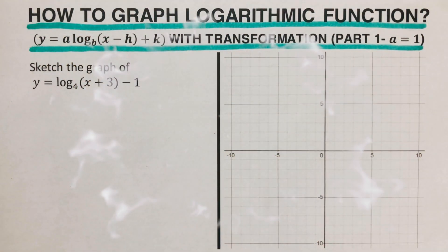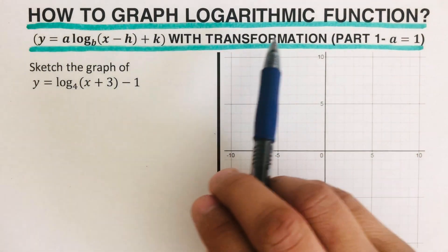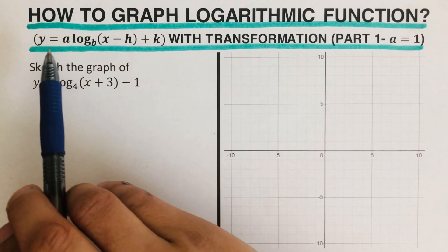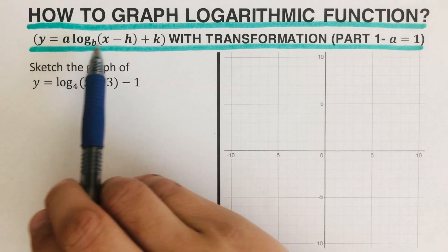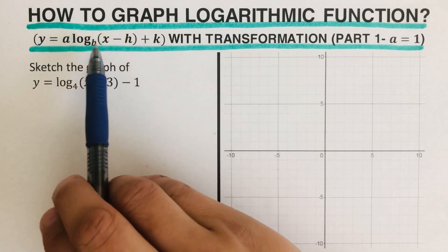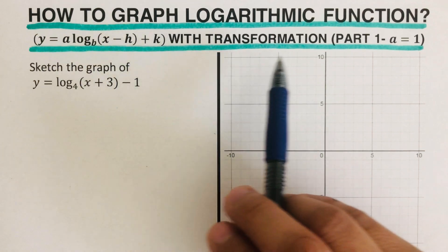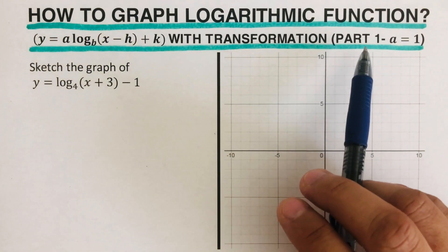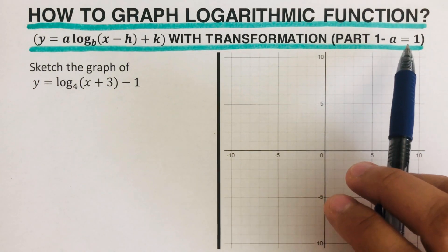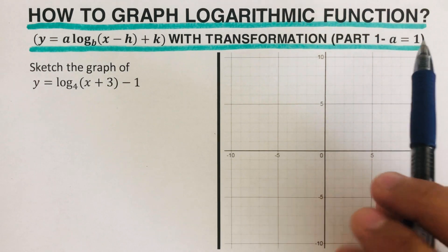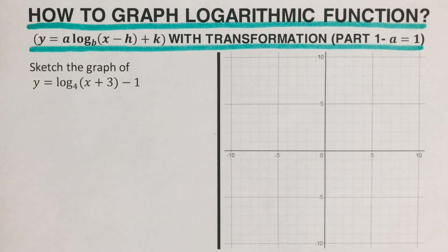Hello everyone. In this video, we are going to graph logarithmic functions of the form y equals a times log base b of (x minus h) plus k with transformations. This is the first part, where we're going to have a equal to 1.